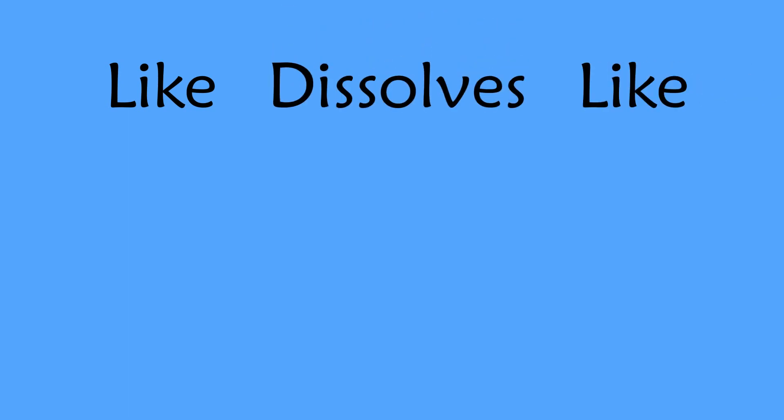A useful rule of thumb for predicting solubility is like dissolves like, meaning a solute will dissolve best in a solvent that has similar chemical characteristics. One of these characteristics is polarity.